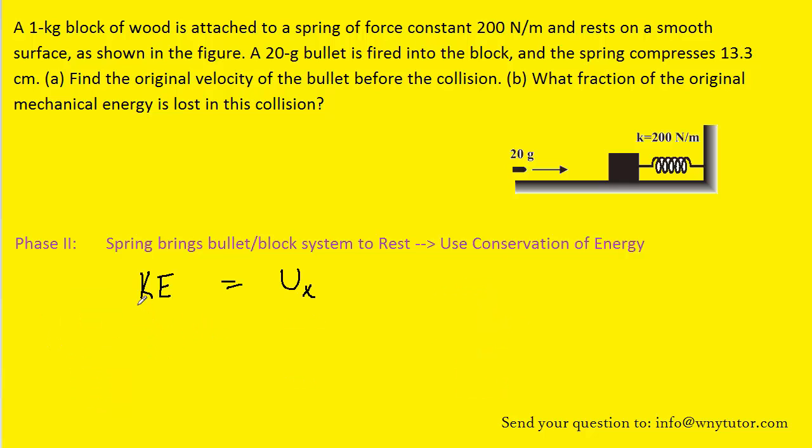It'll be helpful to replace kinetic energy with its corresponding representation, and same with the elastic potential energy. Notice that one half appears on both sides of the equation, so we can eliminate it. And then we can divide both sides of the equation by M in order to isolate V squared. And then finally, we can take the square root of both sides. That way, we can actually solve for the speed of the bullet and block.